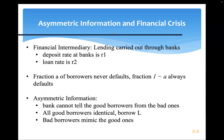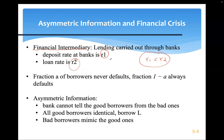Now let's look at the financial market — the banking sector, or financial intermediaries, which include banks or any financial institutions that can lend money. The deposit rate is R1 and the loan rate is R2. I'll show you that R1 must be less than R2 for good reason, and this is because of asymmetric information.